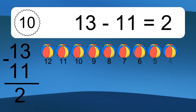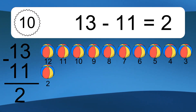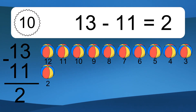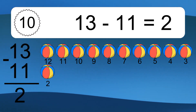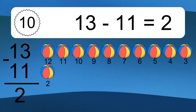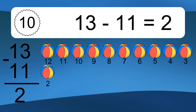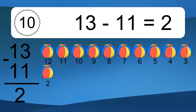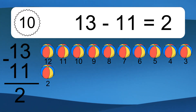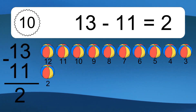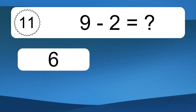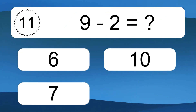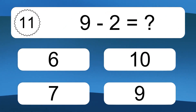13 minus 11 equals what? 13 minus 11 equals 2. Let's count it. 12, 11, 10, 9, 8, 7, 6, 5, 4, 3, 2.